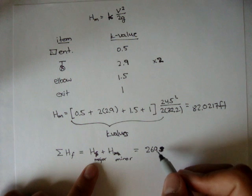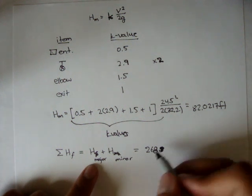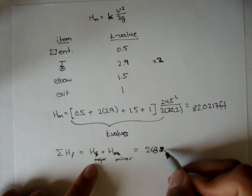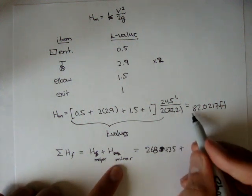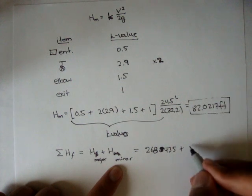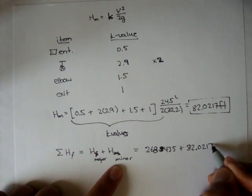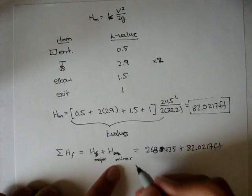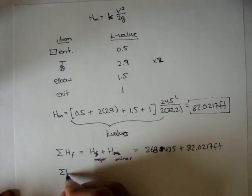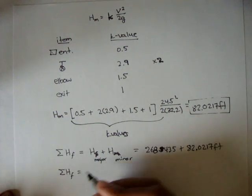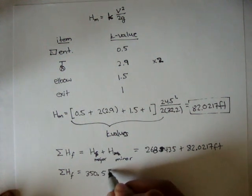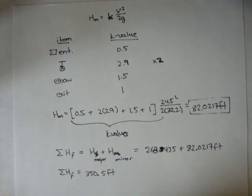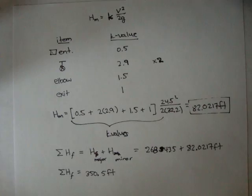So 268.435 and our minor loss up here was 82.0217 feet. And so the total frictional head loss is about 350.5 feet. And we'll finish up the problem in the next video.